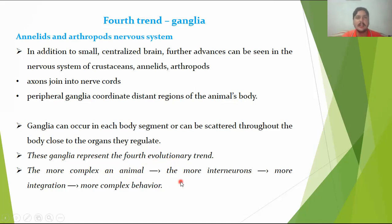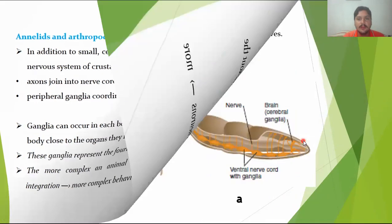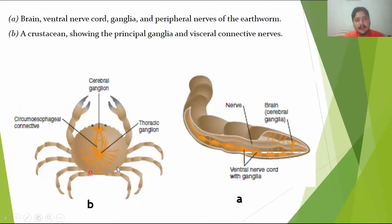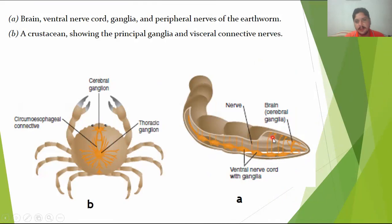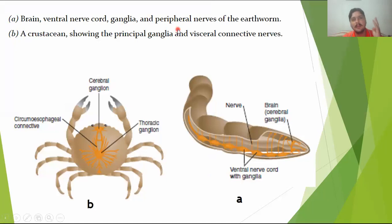More complex animals have more interneurons — also called associative neurons or relay neurons. In the case of a crab, you can see the cerebral ganglion and circumferential ganglion connectives that spread throughout the body. In the earthworm, the body consists of nerves with a cerebral ganglion at the anterior side, forming a network. Concentrations of cell bodies form ganglion structures, giving the earthworm a brain, ventral nerve cord, ganglia, and peripheral nerves.